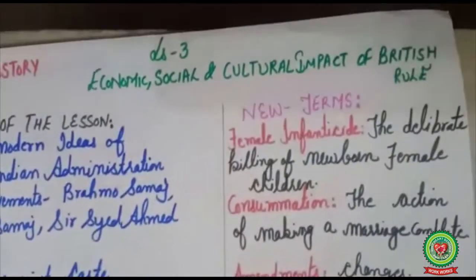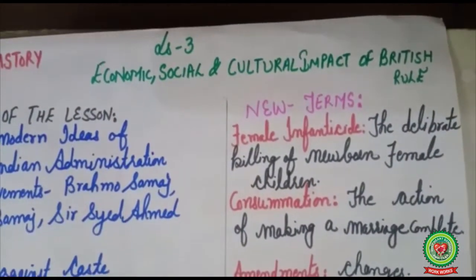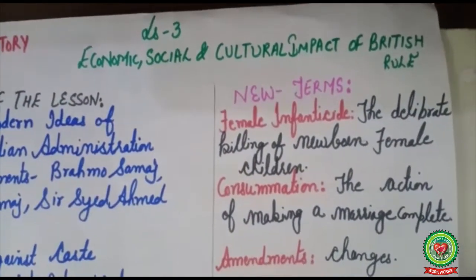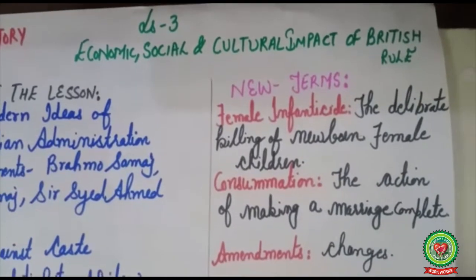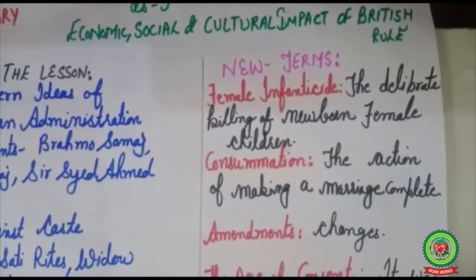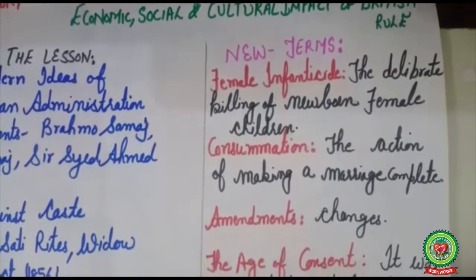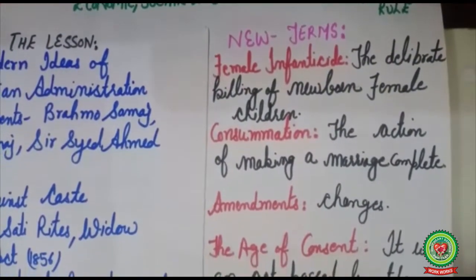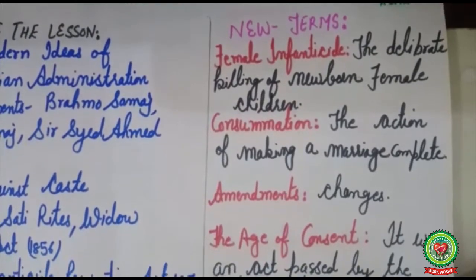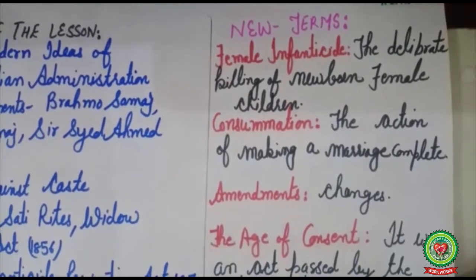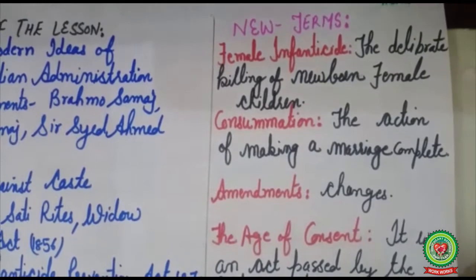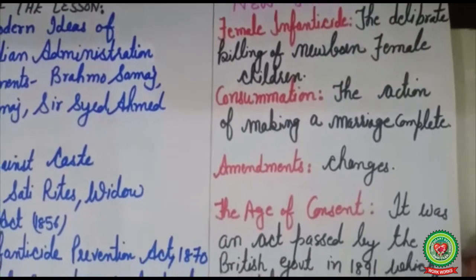Before going ahead, we will go through the new terms of this lesson. Female infanticide means the deliberate killing of newborn female children. Consummation means the action of making a marriage complete.